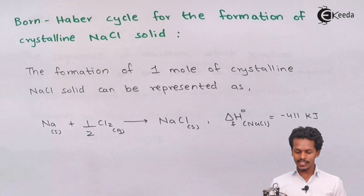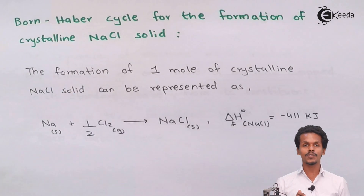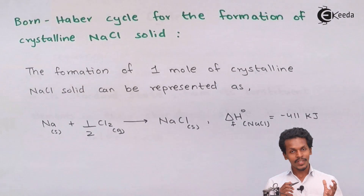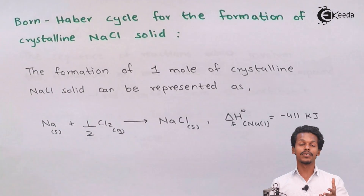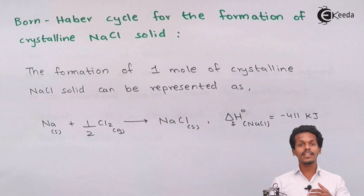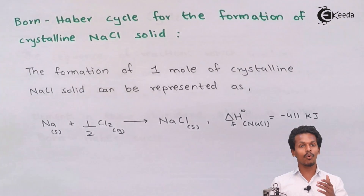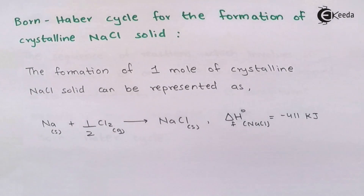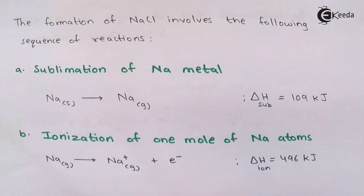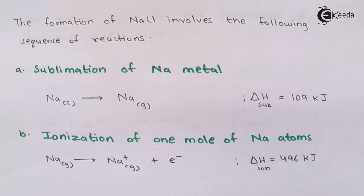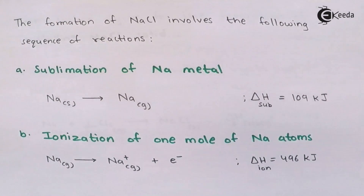However, the formation of NaCl does not happen directly when you bring solid sodium and chlorine gas together. It takes place through several steps. The formation of NaCl involves the following sequence of reactions which together lead to the formation of NaCl as an ionic solid.